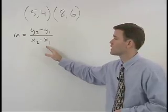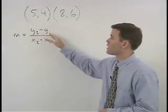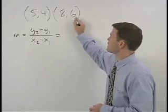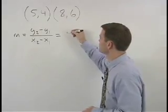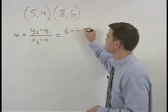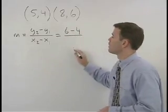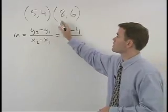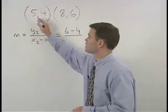In other words, we take our second y minus our first y, which in this case is 6 minus 4, over our second x minus our first x, which in this case is 8 minus 5.